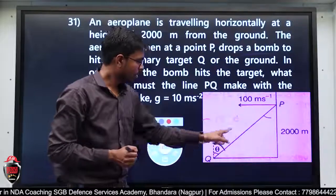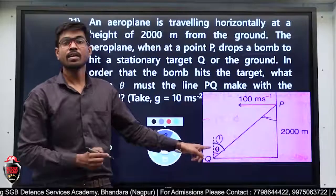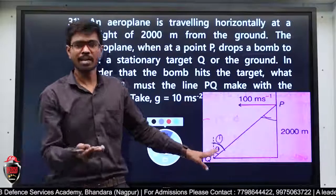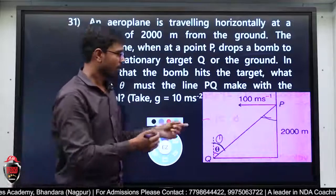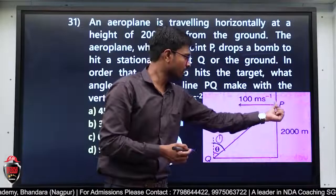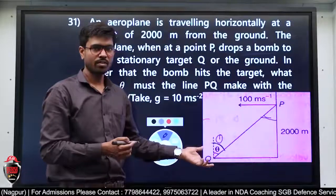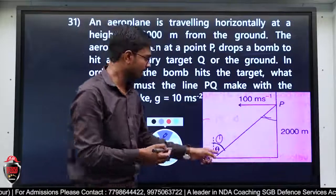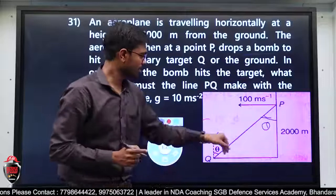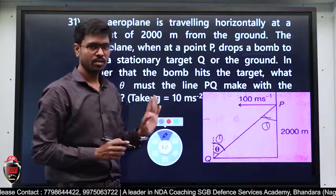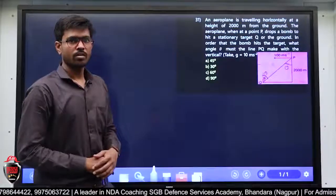Line PQ ने vertical के साथ कौन सा angle बनाना चाहिए — मतलब अगर यह angle theta है, तो theta angle कौन सा बनाना चाहिए vertical के साथ — यह हमको बताना है। Bomb यहाँ से 100 meter per second से फेंका है, वो target पर strike हो जाए। तो यह theta निकालना है।